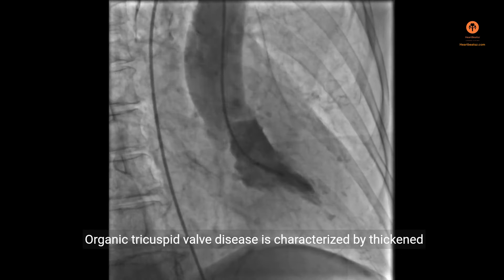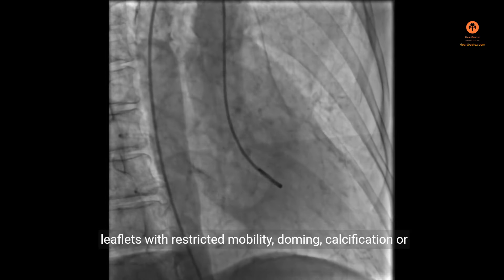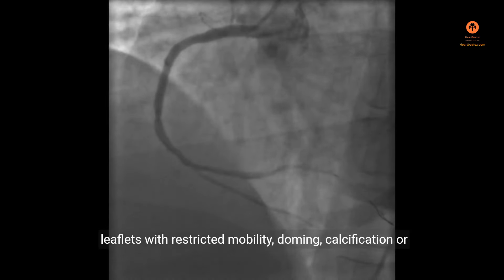Organic tricuspid valve disease is characterized by thickened leaflets with restricted mobility, doming, calcification, or prolapse.